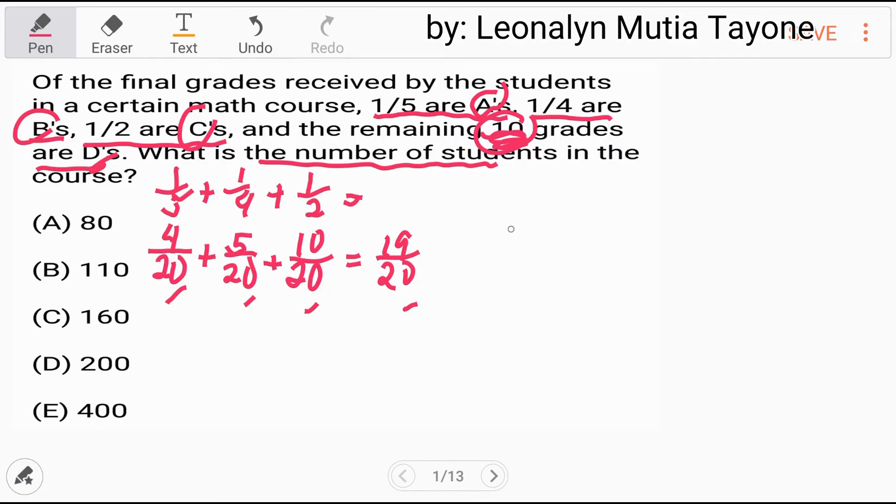Na yan yung, para maging mabuo lang yung 20 over 20 mo, yung as a whole, 1. So mayroon ka pang 1 over 20. At ito, yung natira na yan, yan yung itong 10. And the remaining 10, ang grades nila are D. So ito yung equivalent niya ay 10. You see?